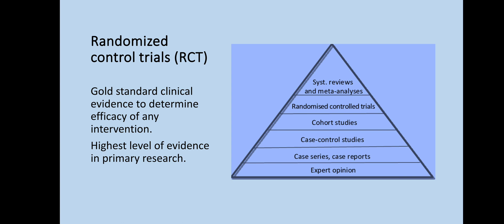Looking at the hierarchy of level of evidence in medical research, you can see that randomized control trials are located at the second top-most position. Above them are systematic reviews and meta-analysis, which are secondary forms of research. So randomized control trials are at the highest level of evidence in primary research. For concepts regarding secondary and primary research, see our previous videos. Randomized control trials provide gold standard evidence to determine the efficacy of any intervention.